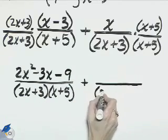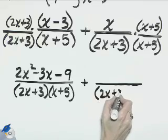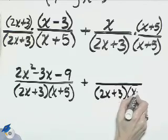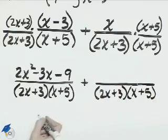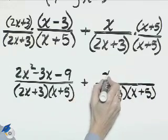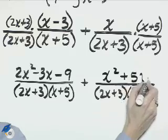The second fraction, the denominator, 2x plus 3 and x plus 5. And the numerator is x times the quantity x plus 5, x squared plus 5x.